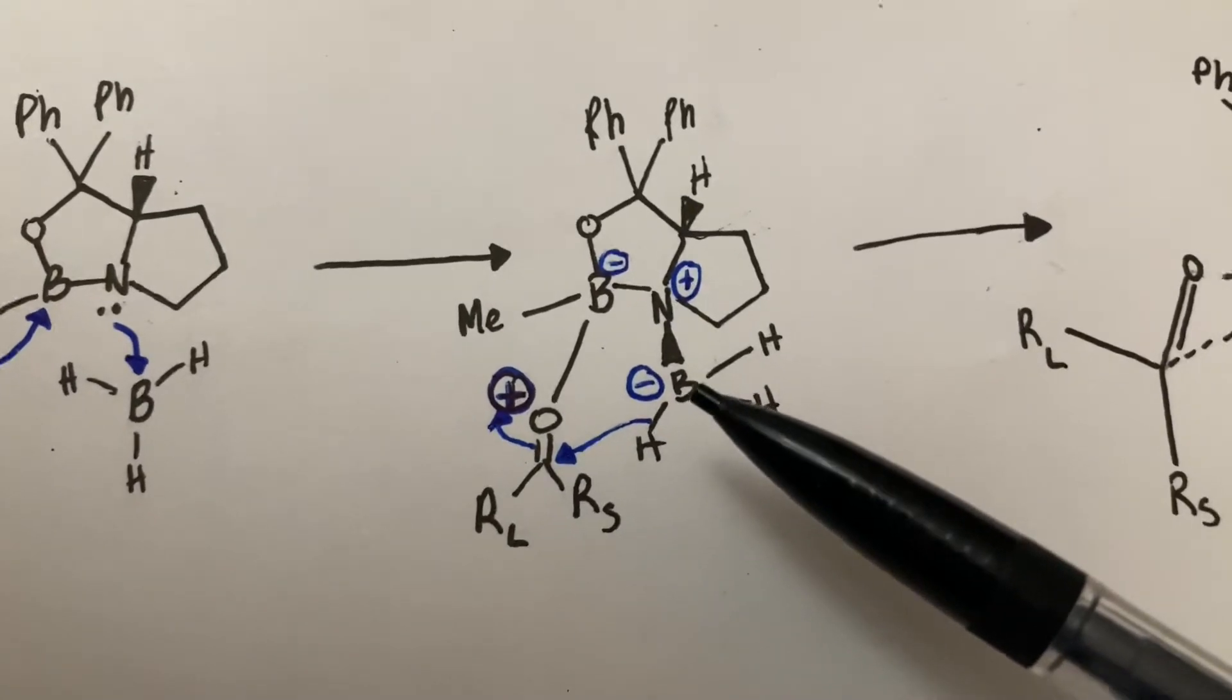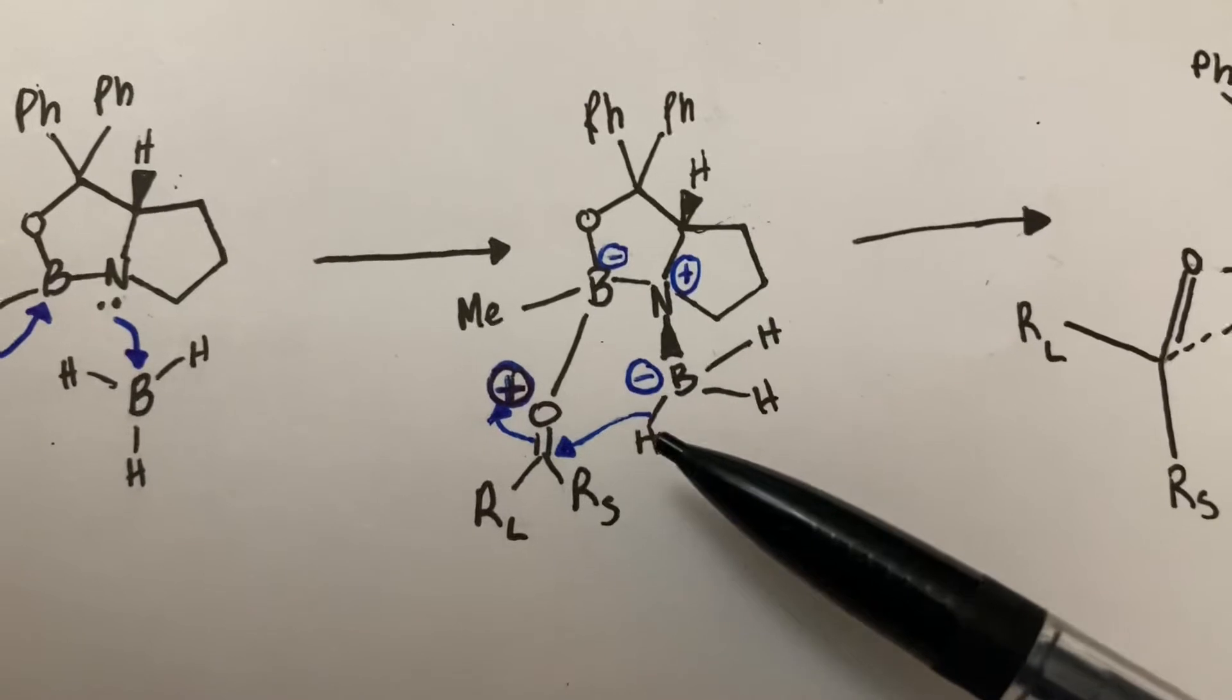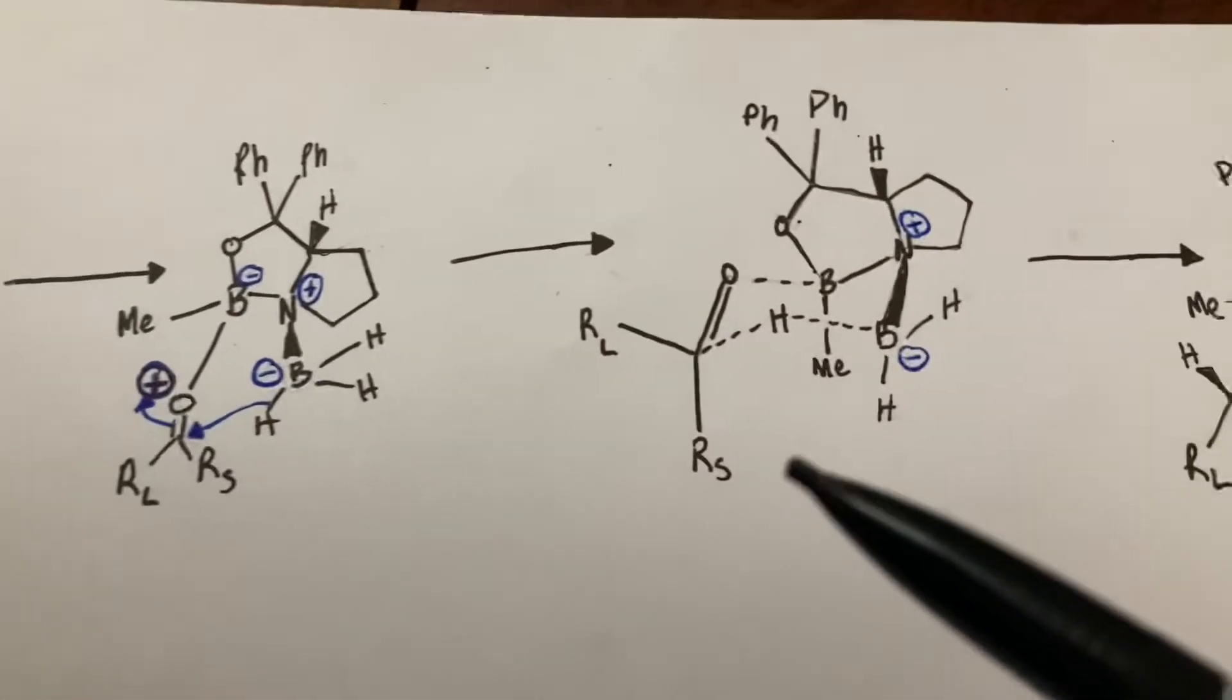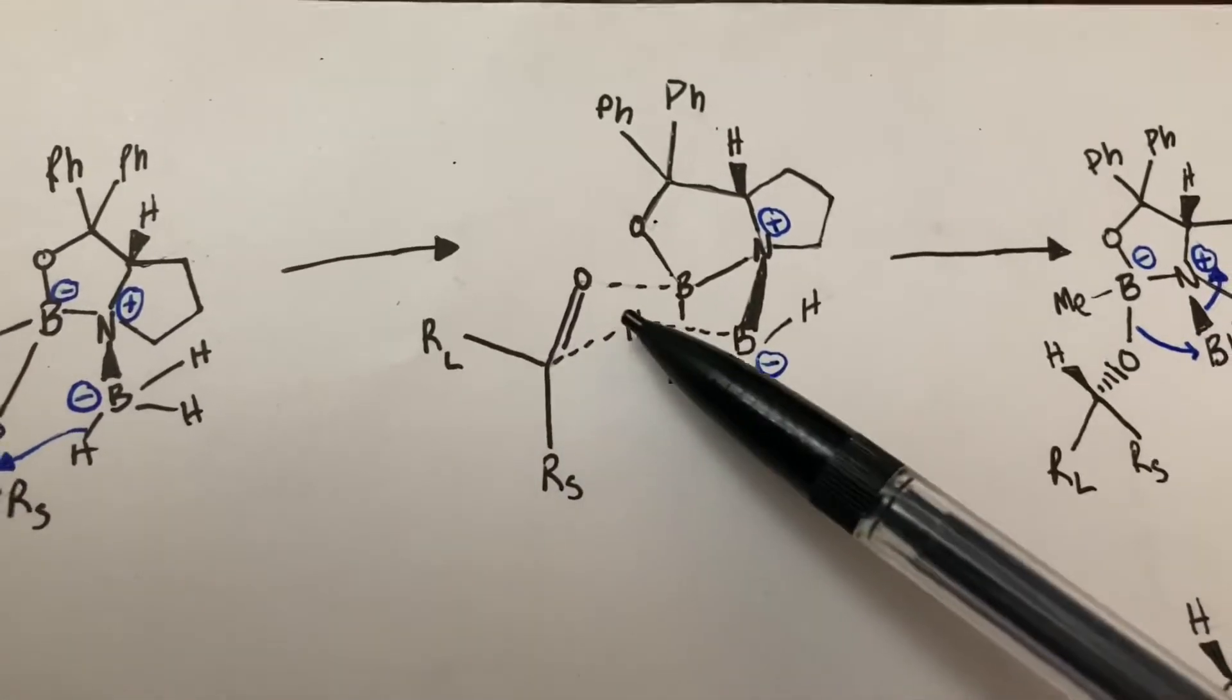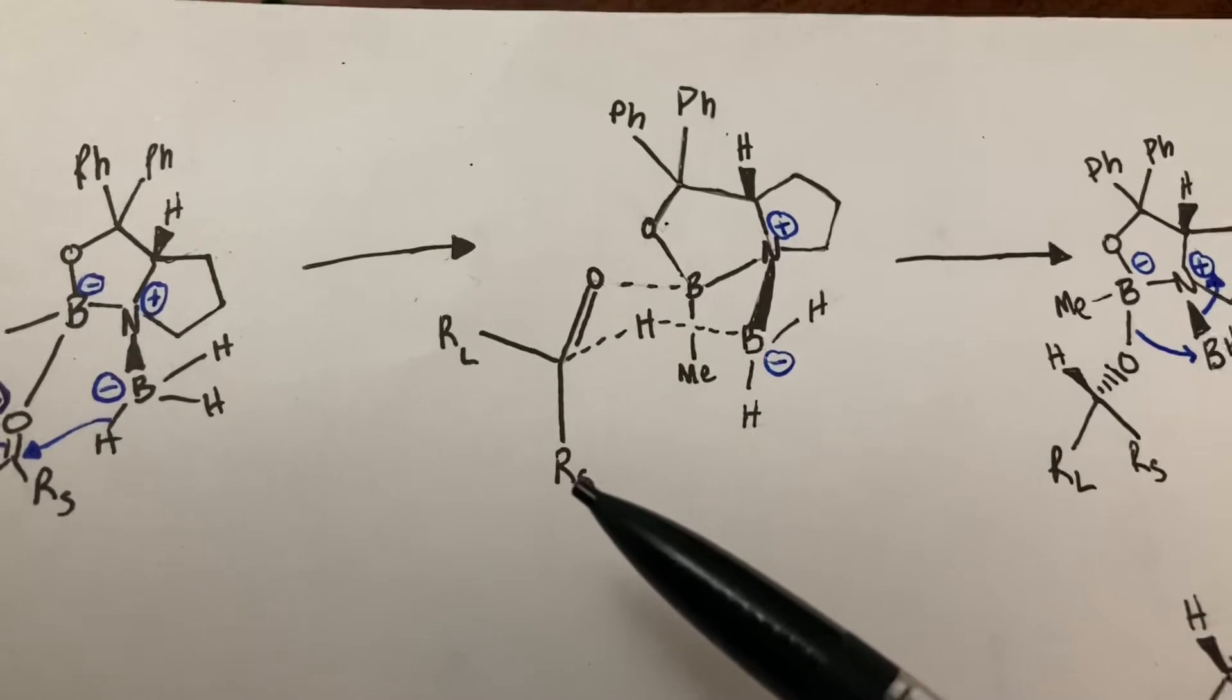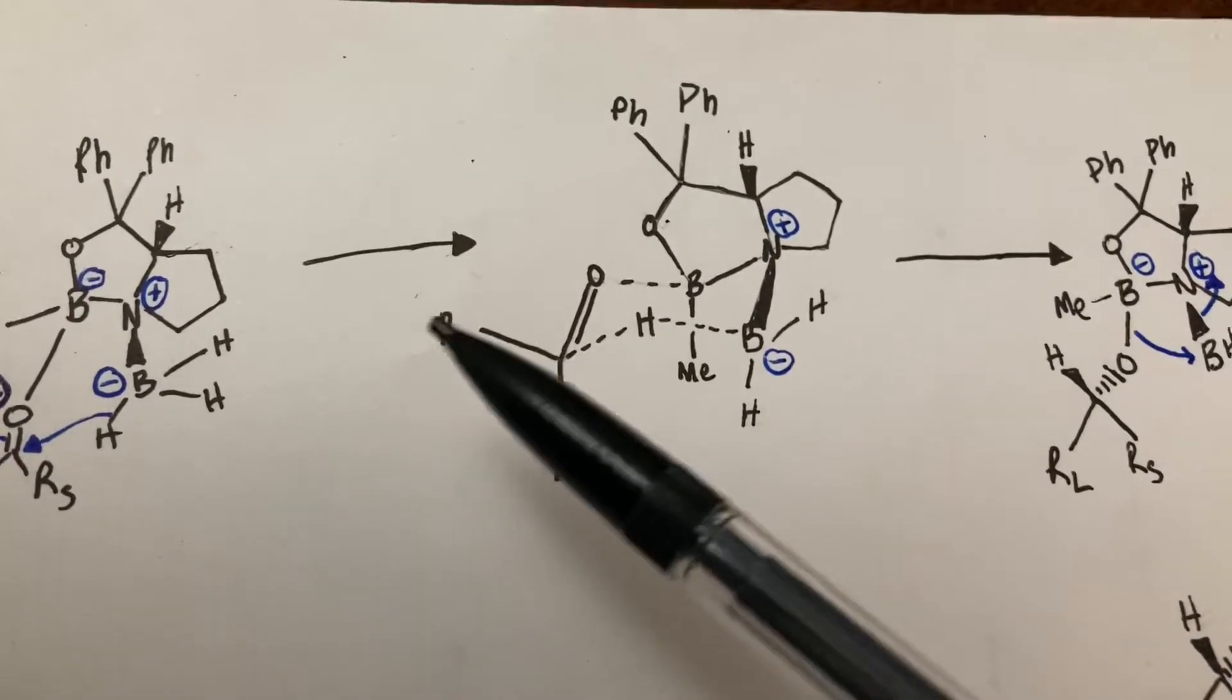And it is important that this borane is now very negative, which makes this hydride want to latch onto this carbon here, which will produce this transition state, which makes a chair conformation of sorts, with the large group being equatorial and the small group being axial, or pseudo-axial and pseudo-equatorial.